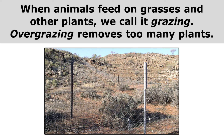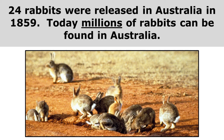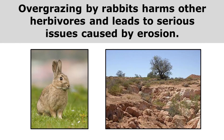Overgrazing removes too many plants. In this picture, you can actually see the effects of overgrazing — animals on this side of the fence have been allowed to eat too many of the plants, and now they're mostly gone. Twenty-four rabbits were released in Australia in 1859, and today millions of rabbits can be found in Australia. Overgrazing by rabbits harms other herbivores and leads to serious issues caused by erosion, because other herbivores no longer have the plants they need for food.